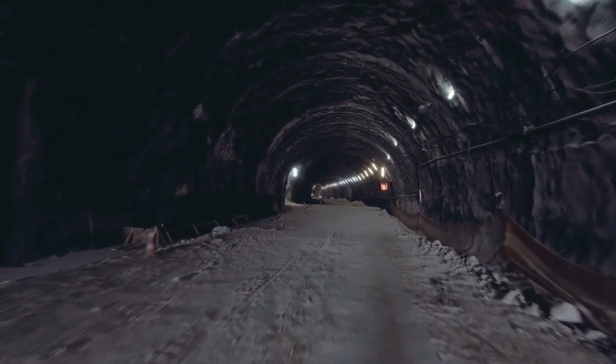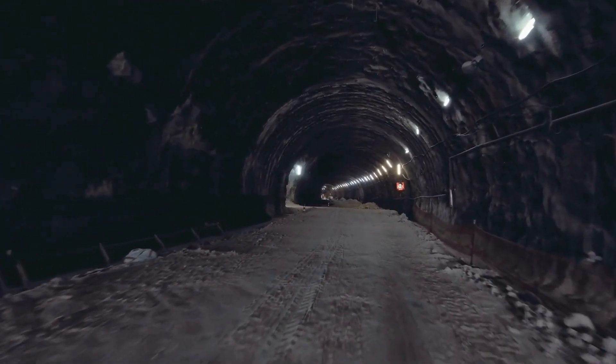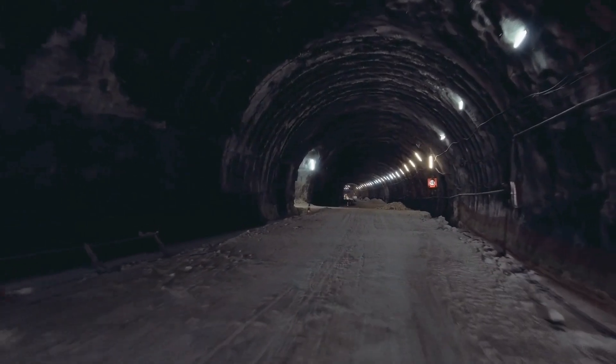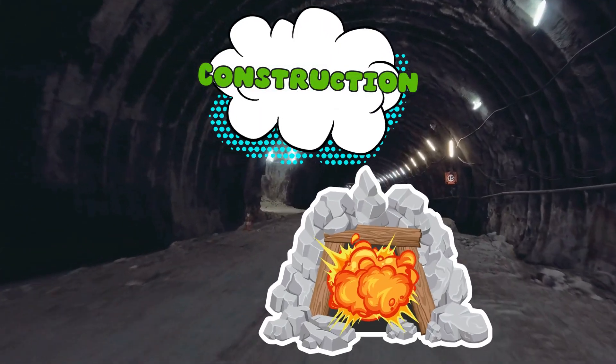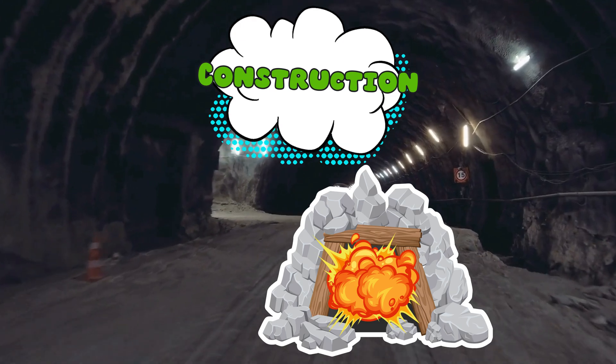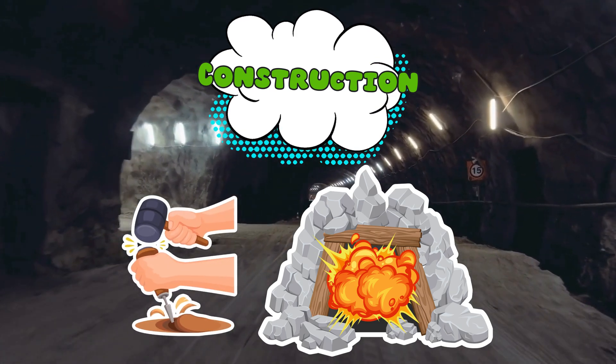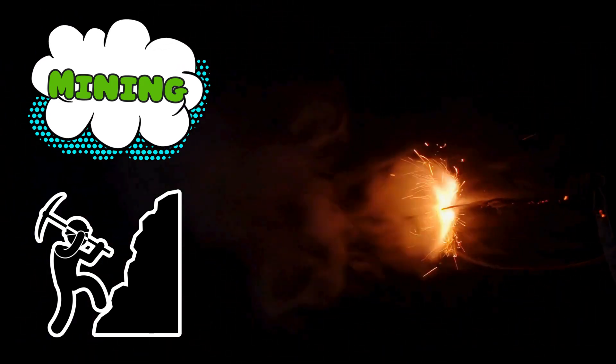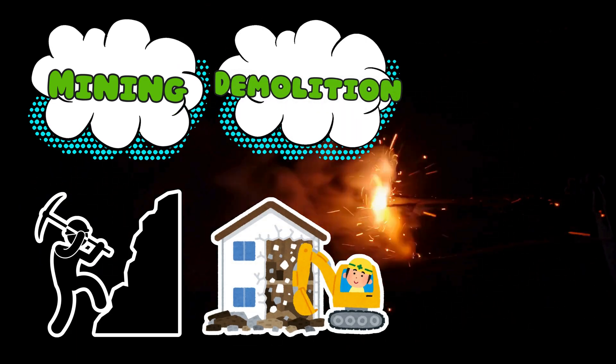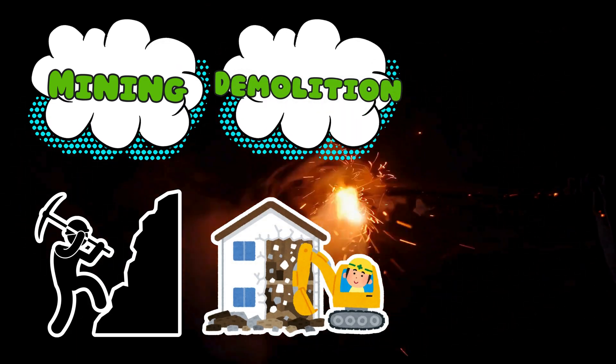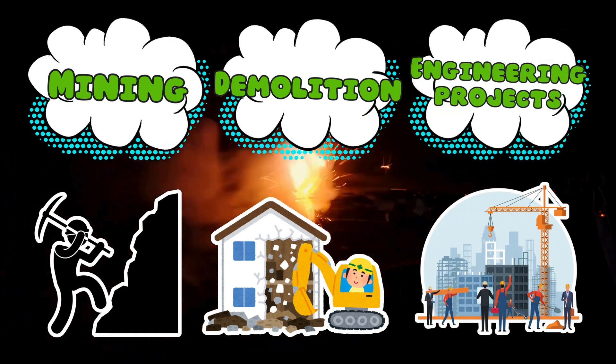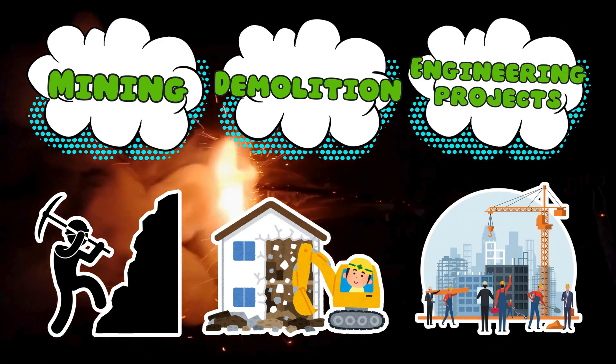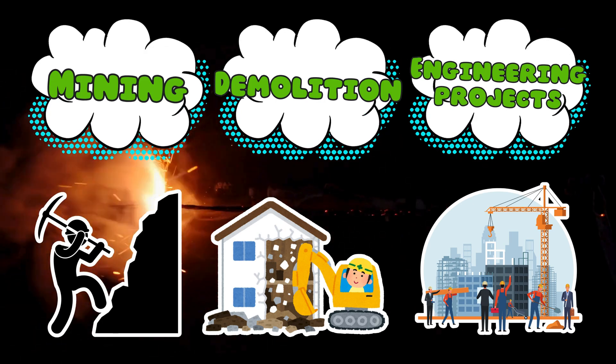Despite its reputation for chaos, dynamite has done a lot of useful stuff. It's used in construction, like blasting tunnels through mountains. Because hand-chiseling takes forever, and humans are lazy. Mining, breaking up rock to get to valuable ores. Shiny things are worth the risk. Demolition, taking down old buildings with a bang, literally. Engineering projects, like redirecting rivers, building dams, or impressing physics students.